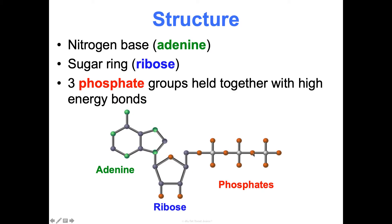What's important to know is that this is a not very stable molecule. Because of that, it doesn't take a lot of energy to break the bond right here between the second and third phosphates — it doesn't require a lot of energy at all. So if we want to access some energy, we're going to want to break this bond and go from adenosine triphosphate with three phosphates to adenosine diphosphate with only two.